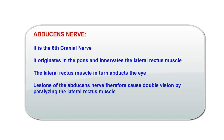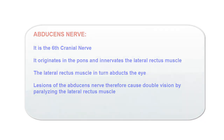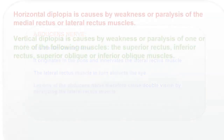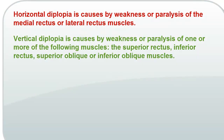Any time a person presents with diplopia, one question to ask is whether it's vertical diplopia — meaning one image is on top of the other — or lateral diplopia, where the images are side by side. If diplopia is side by side, you suspect either the lateral rectus muscle or the medial rectus muscle.